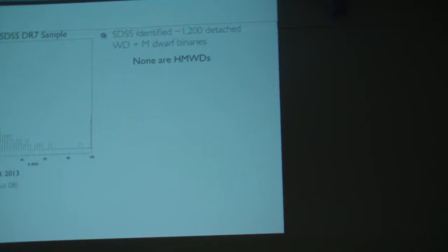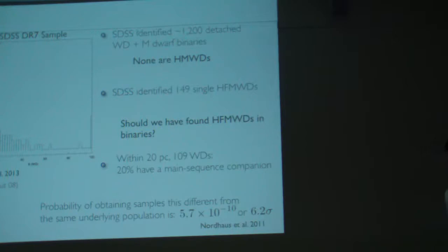You can use SDSS, the Sloan Digital Sky Survey. This is data release 7 from this year. SDSS identified about 1,200 detached white dwarf and M dwarf binaries. Not a single one was highly magnetized. It also identified 149 single high-field magnetic white dwarfs.